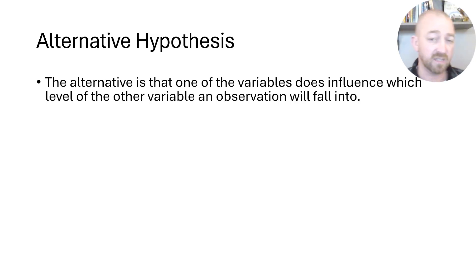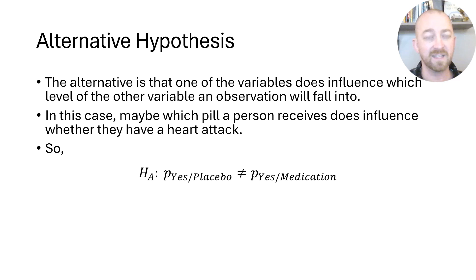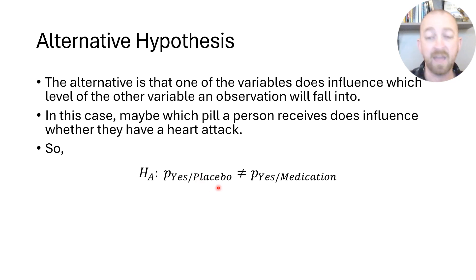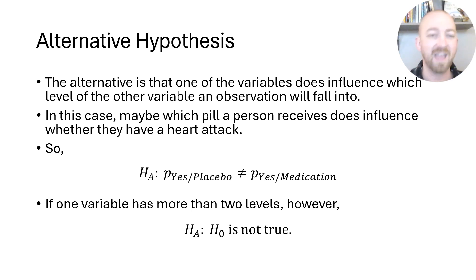The alternative hypothesis is that it actually does matter which level you received, and that will influence which level of the other variable you fell into. For example, maybe it does matter which pill somebody received, and that will influence whether they had a heart attack or not. The alternative hypothesis simply states that the probability of a heart attack with the placebo did not equal the probability with the medication. However, this works cleanly only with a two-by-two design. If any variable has more than two levels, you simply state that there is something wrong with the null hypothesis — that it is not true.